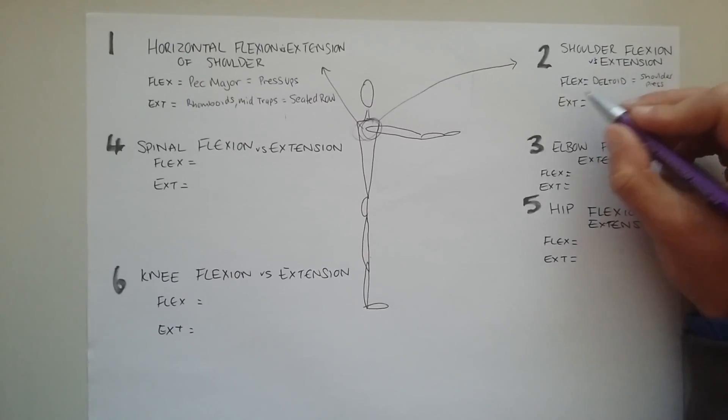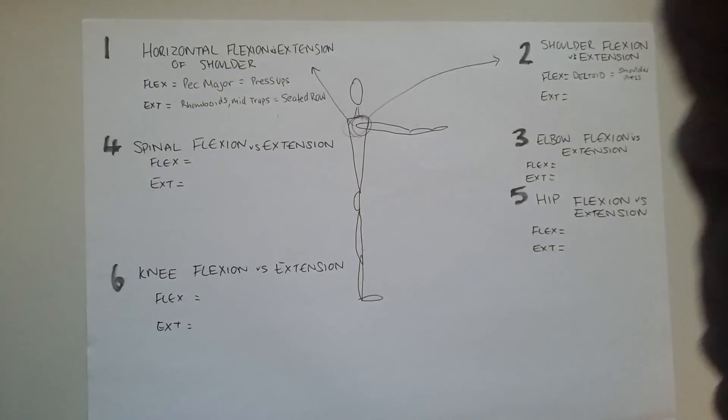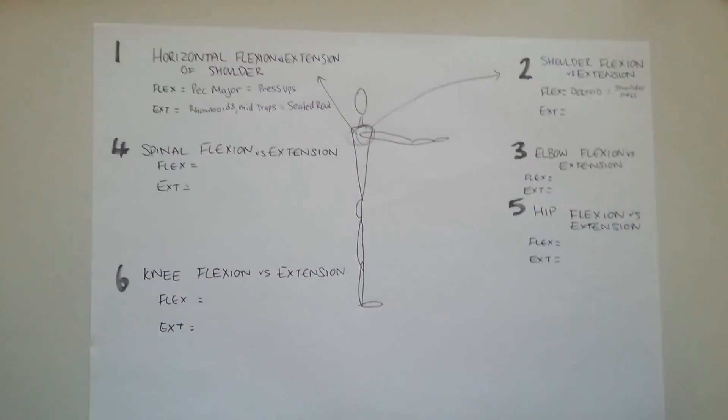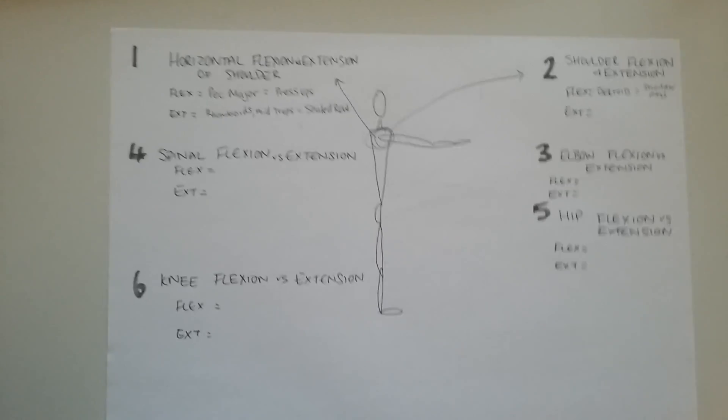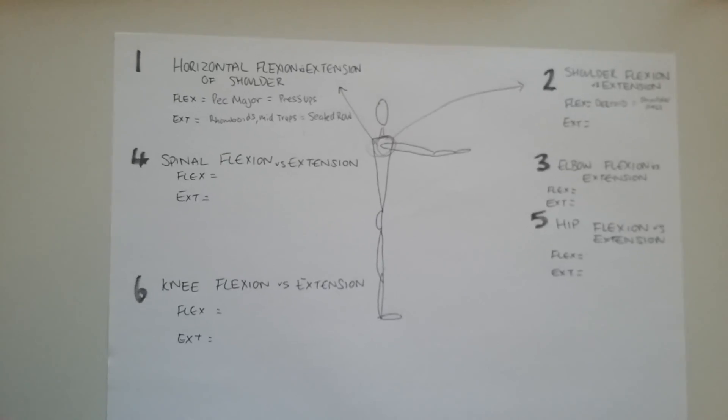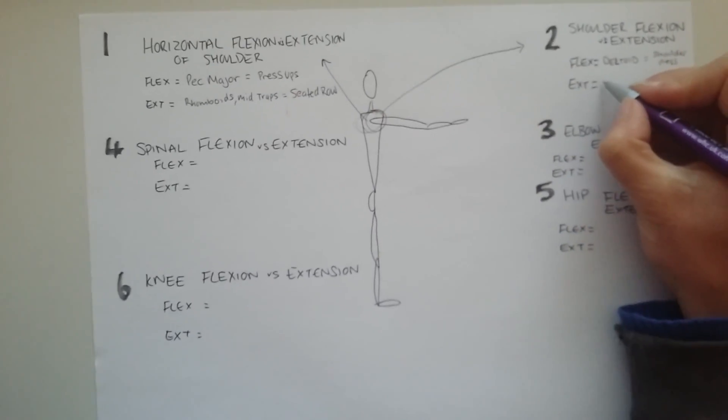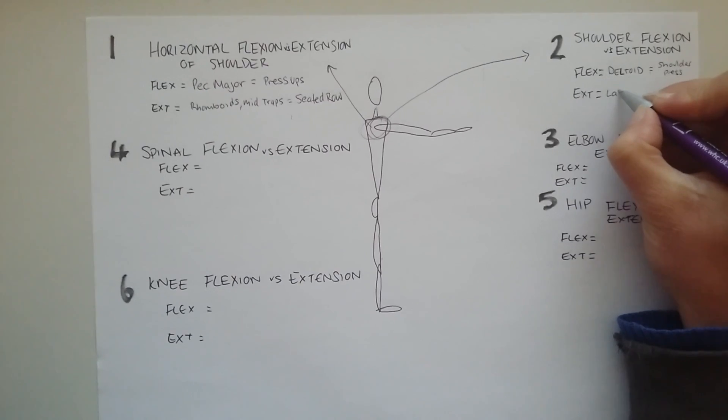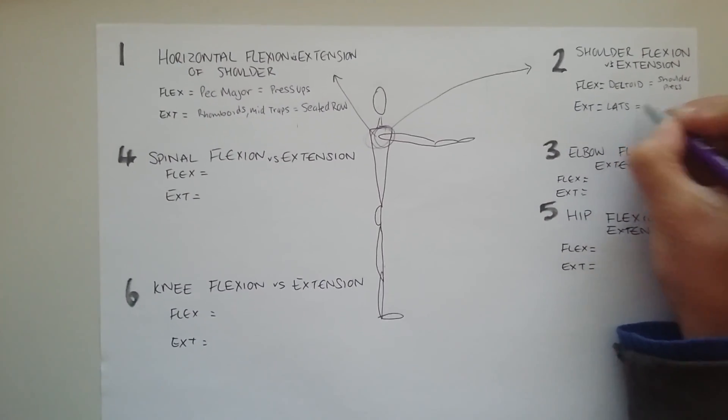Then the opposite to this is extension. So we're going to go from having our arms in the air and we're going to pull our arms down. Now that could be in front, it could be to the side, doesn't matter either way. As long as we are reducing that space really between our arm and our waist so you're almost like closing it in. Now this basically works our lats. So it's our lats that are responsible for this. So our latissimus dorsi.